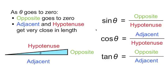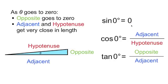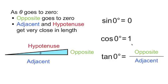So let's use this information to find the sine, cosine, and tangent of 0 degrees. Sine is opposite over hypotenuse, and as theta goes to 0, opposite goes to 0. And 0 over a number is still 0, so the sine of 0 degrees is 0. For cosine of 0 degrees, as theta goes to 0, adjacent and hypotenuse get very close in length. So let's replace adjacent in the numerator with hypotenuse — hypotenuse over hypotenuse is 1, so the cosine of 0 degrees is 1.